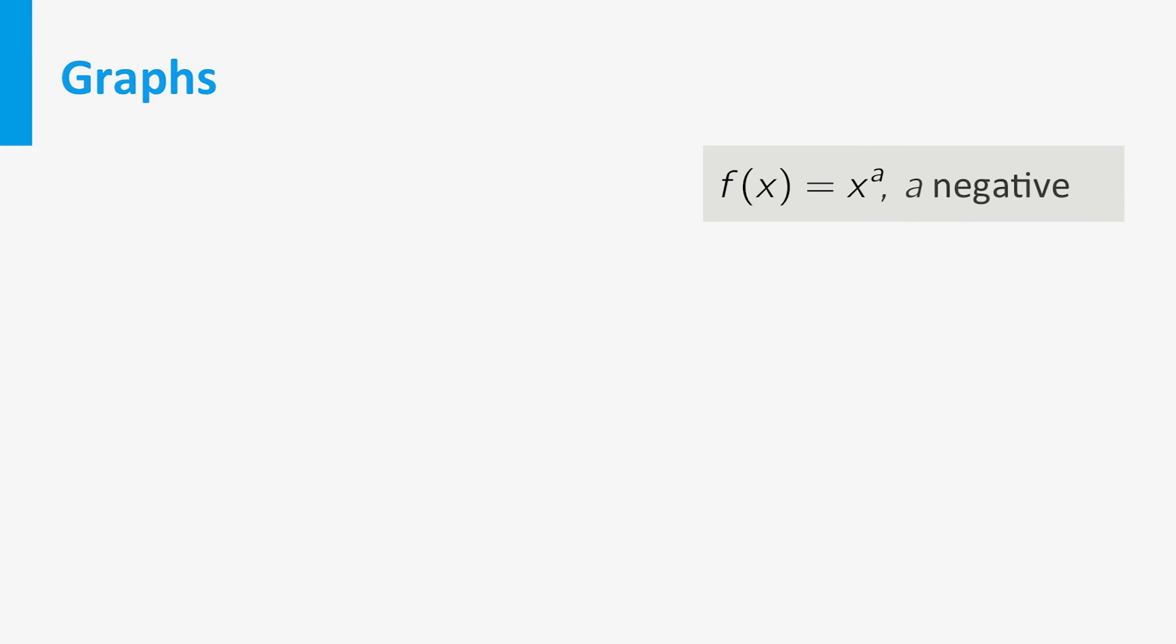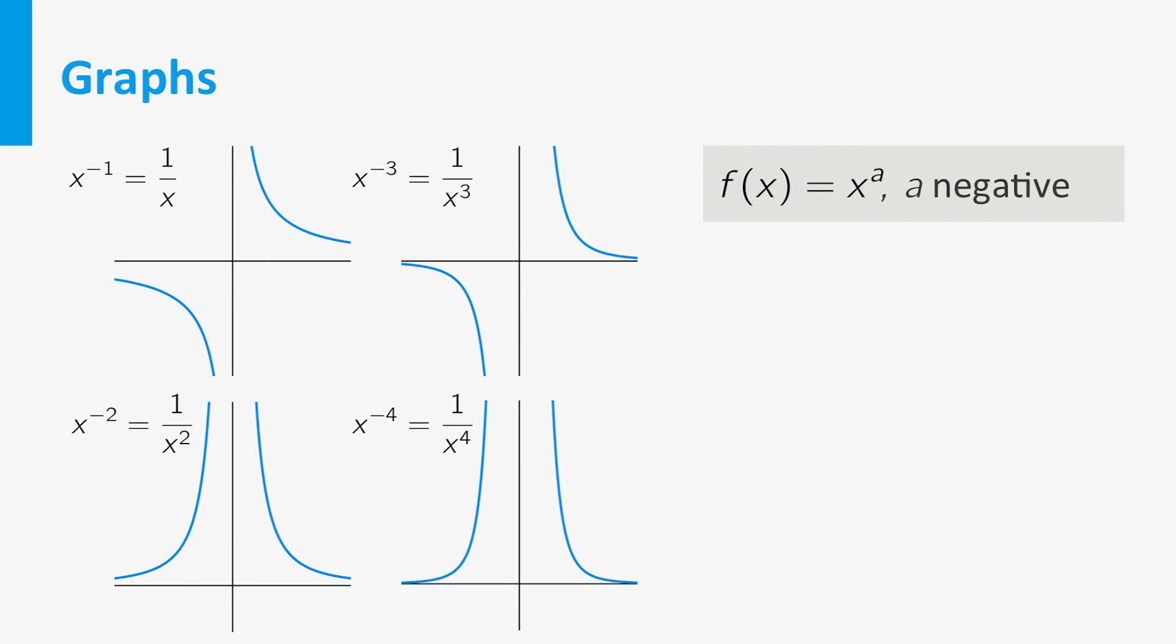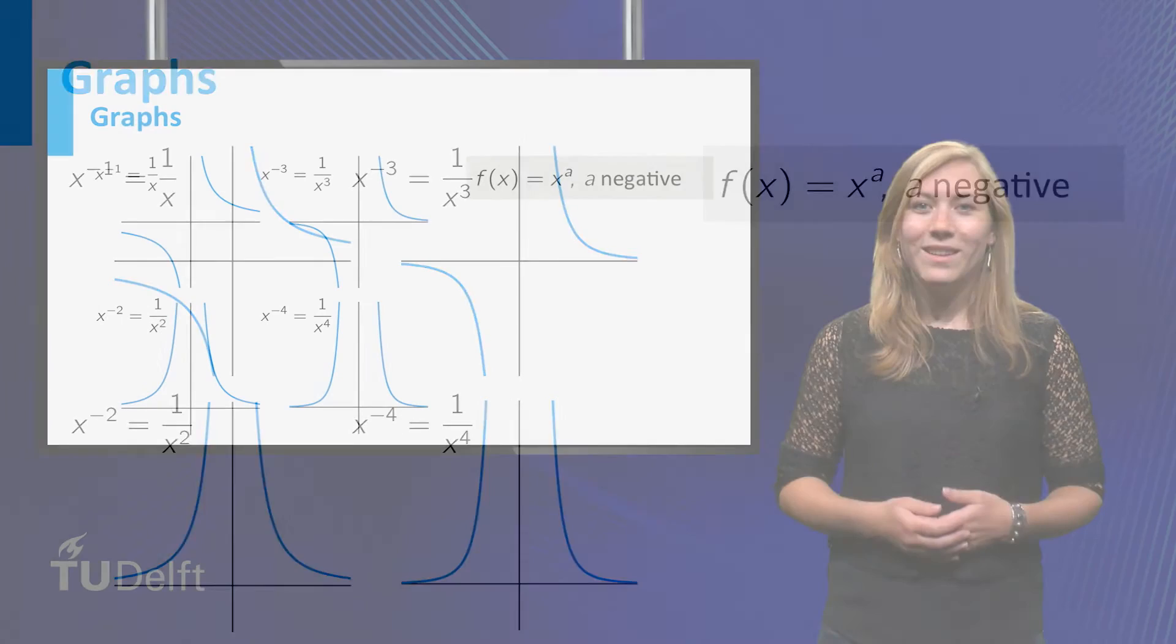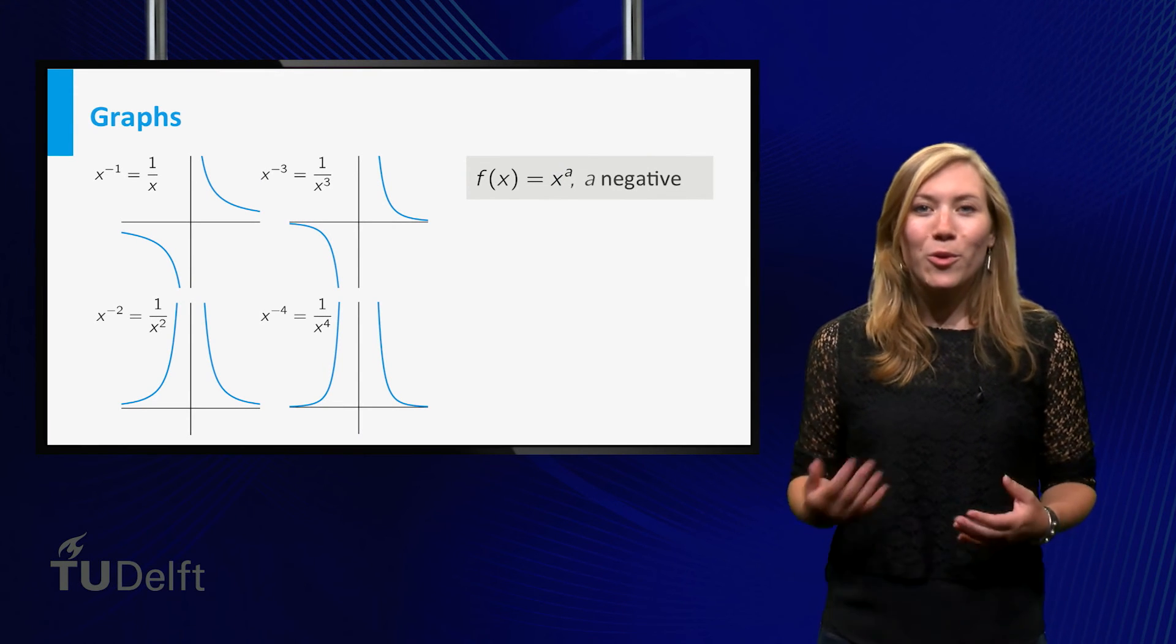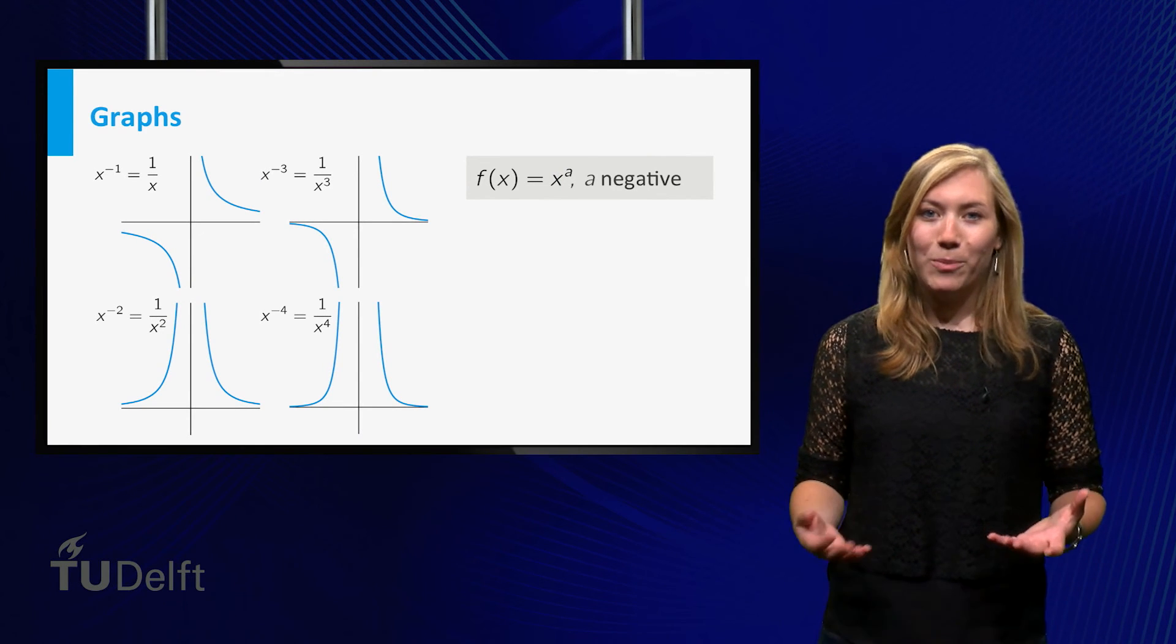For these negative values of a, the graphs are quite different. The graph of x to the power minus 1 is called a hyperbola. For a equals minus 2, the graphs look like this. This is the graph of x to the power minus 3. For a equal to minus 4, it looks like this.